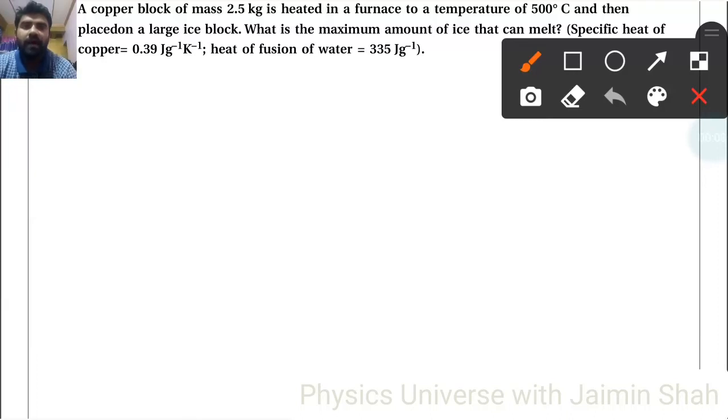Now the question is: a copper block of mass 2.5 kilogram is heated in a furnace to a temperature of 500 degrees Celsius. So mass is 2500 grams.